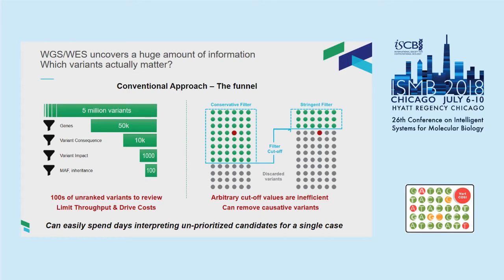After filtering by consequence you get down to maybe a couple thousand or 10,000 variants. Then you also filter by minor allele frequency — if it is a rare genetic disease, the variant cannot be common in the population. You may end up with hundreds of variants that still need to be reviewed to confirm which is disease-causing. The problem is all these filters are arbitrary, made at different thresholds by different people. Sometimes you could inadvertently remove the causal variant, or being too conservative leaves hundreds of genes to analyze — meaning hours or even days per case.